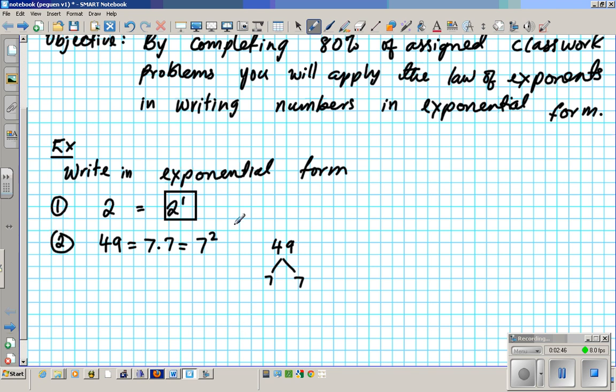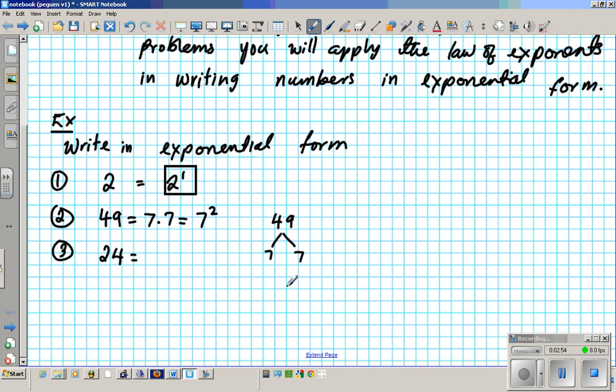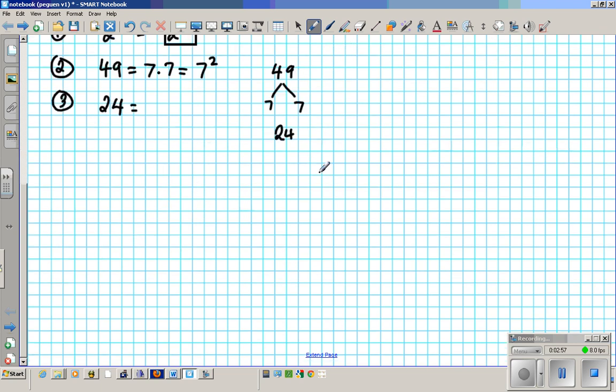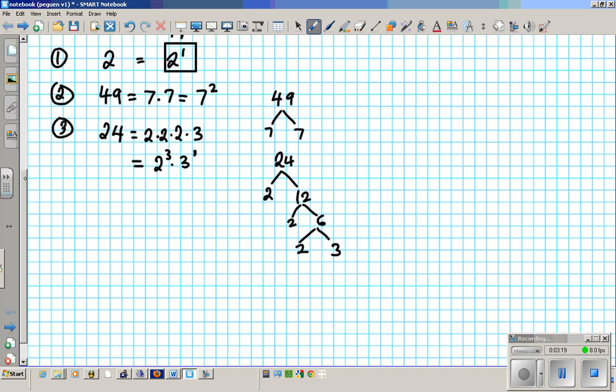What if we had 24? How do you write 24 in exponential form? Same process. What we do is we take 24 and we break it down using only prime factors. So if I take out 2 out of 24, I'm left with 12. If I take out 2 from 12, I'm left with 6. I take out 2 from 6, I'm left with 3. So essentially, it's going to be 2 times 2 times 2 times 3. So what does that mean? 2 to the 3rd times 3 to the 1. And that's the exponential form.